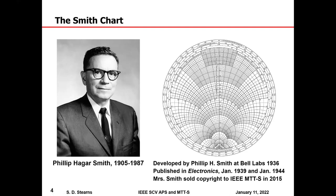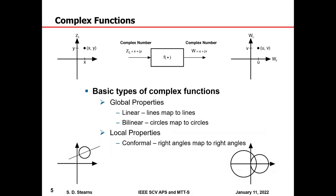The Smith chart is a mapping from the complex plane into the complex plane — a bilinear mapping, meaning circles in the domain space map into circles or lines in the range space, and lines map into circles or lines. It's also conformal, meaning angles are preserved. For example, a circle and a line intersecting at right angles in the domain maps to two circles intersecting at right angles in the range space — the conformal property preserves those right angles.